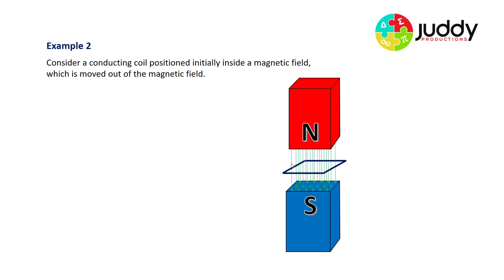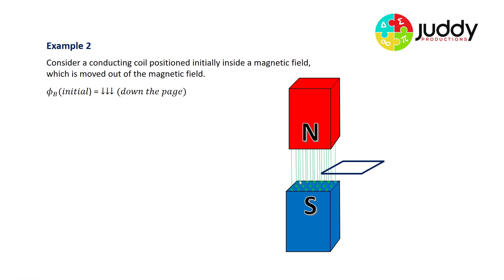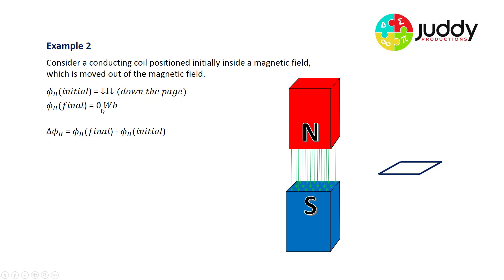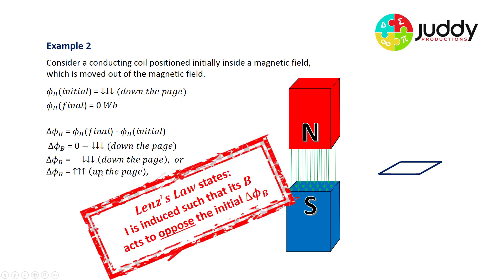Example number two: consider a conducting coil positioned initially inside a magnetic field, which is then moved out of the magnetic field. Initially, we have a magnetic flux going down the page, and you can see the magnetic field B threads through the coil. Then our coil is moved out of the field to a point where no magnetic field lines thread through the coil and our final flux is zero weber. Our change in flux is the final flux take away the initial, which is zero take away down the page.